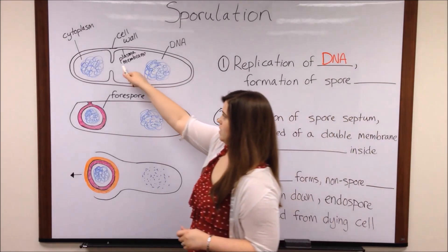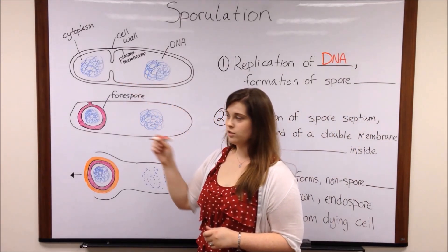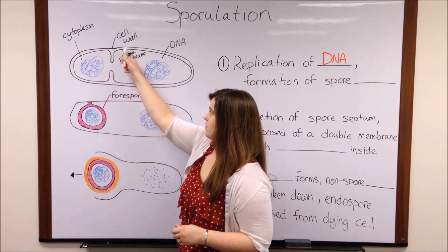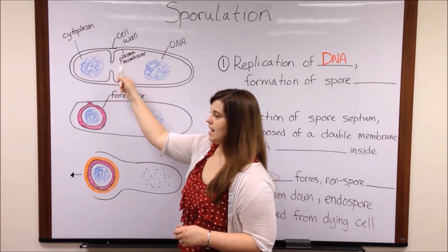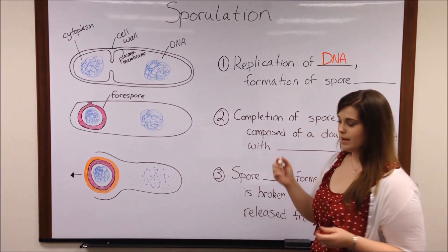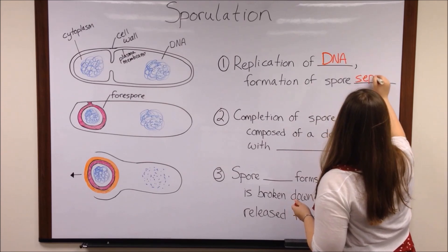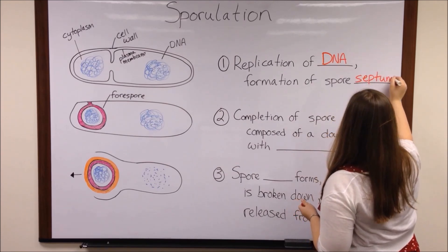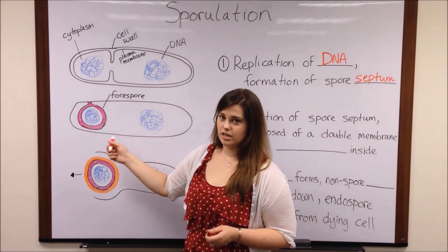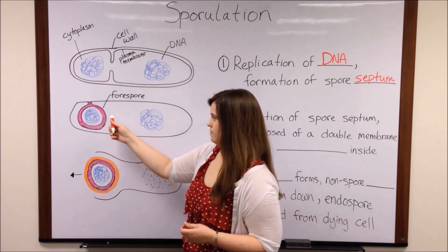Also the plasma membrane begins pinching in to separate off a little bit of the cytoplasm as well as the newly replicated DNA. This pinching in at the plasma membrane is the beginning of the formation of a spore septum. Then you have later completion of the spore septum from more plasma membrane pinching in.